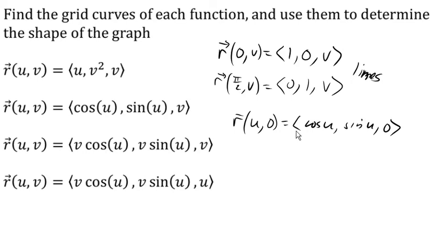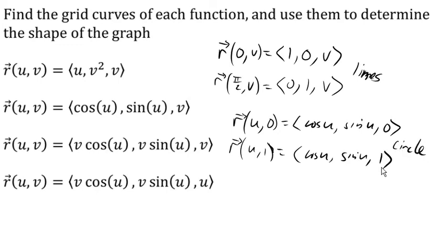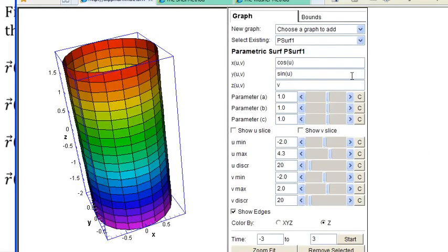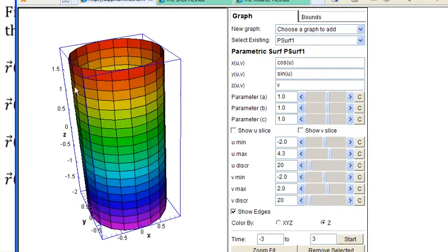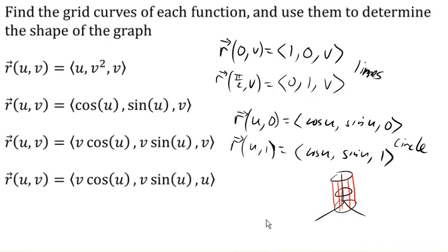Let's confirm: if v equals 1, we'd have (cos u, sin u, 1) — indeed also a circle, but at a different z value. So we're getting circles at different z values for one set of grid curves, and lines for the other. These grid curves grid out the surface together. Looking at the graph, we do get circles at different z values all with the same radius, and vertical lines in the z direction — together forming a circular cylinder.